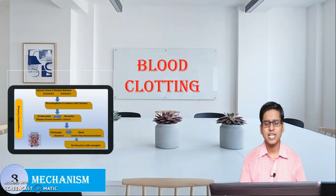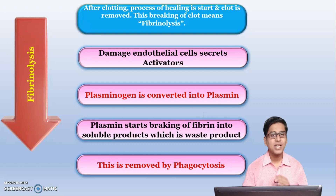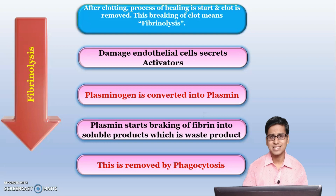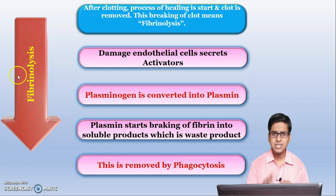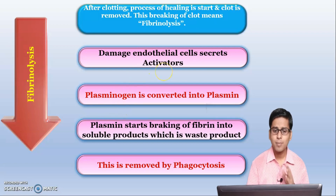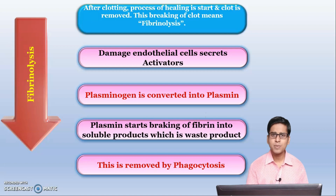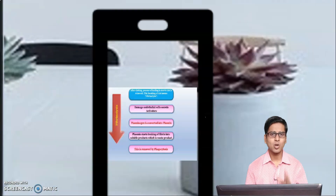The fourth stage is called fibrinolysis. After the clotting process, healing starts and the clot is removed. This breaking of the clot is called fibrinolysis — whenever the word 'lysis' appears it means to break. Damaged endothelial cells secrete an activator which converts plasminogen, already present in the clot, into plasmin. This plasmin starts to break the fibrin from which the clot was formed. That fibrin is converted into waste products and these waste products are removed by phagocytosis by the macrophages. In this way we have finished with the blood clotting mechanism.